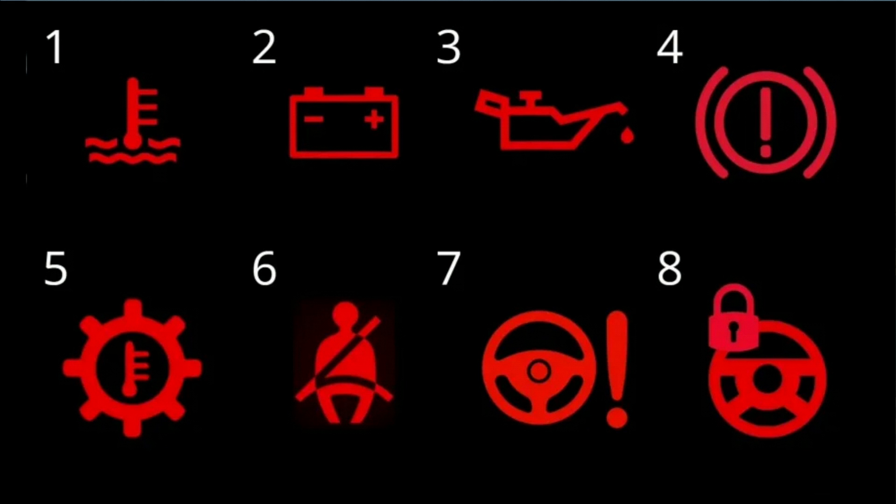Number 6: Seat Belt Indicator. All vehicles in production today have sensors that detect whether the seat belts are latched or unlatched.